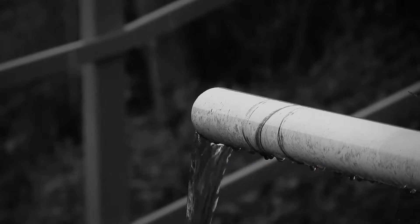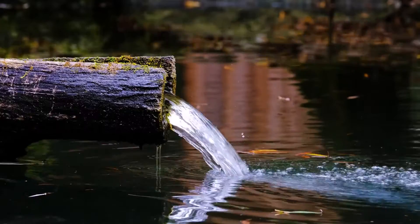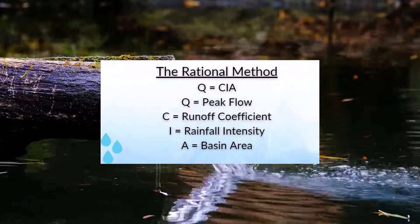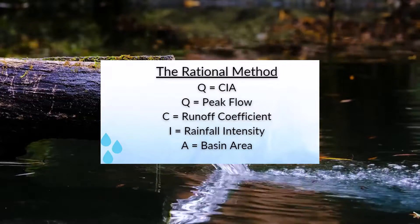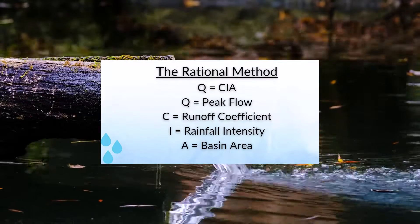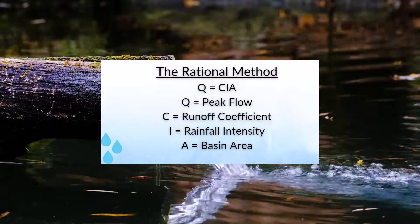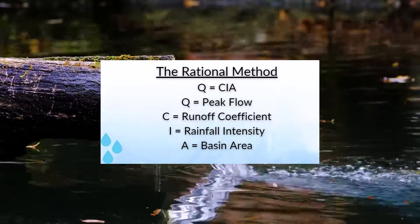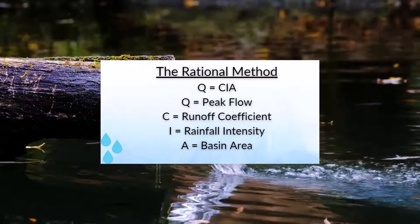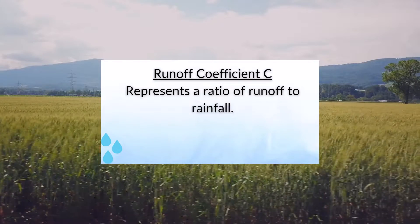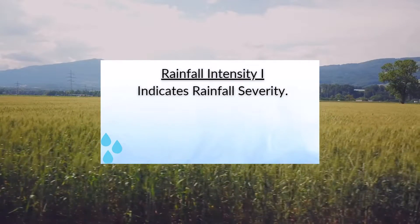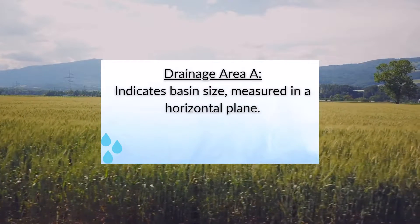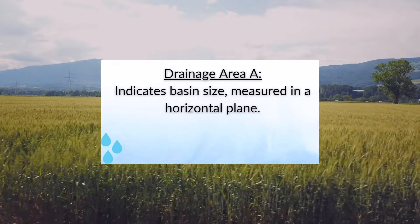We're going to be introducing what the rational method is. Basically, it revolves around the core equation Q equals CIA. Q stands for the peak flow in cubic feet per second off the stormwater site. C stands for the runoff coefficient. I equals the rainfall intensity in inches per hour. A equals the drainage area in acres.